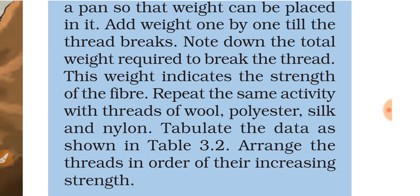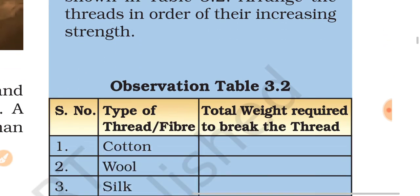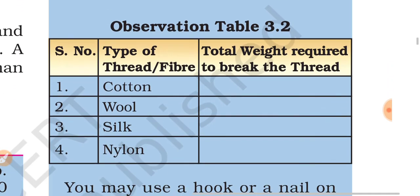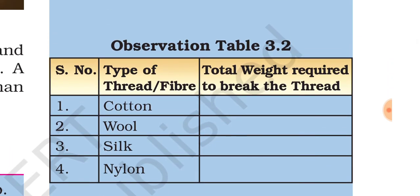Repeat the same activity with threads of wool, polyester, silk and nylon. Tabulate the data as shown in table 3.2. Arrange the threads in order of their increasing strength. Observation table 3.2: types of thread or fiber and total weight required to break the thread.